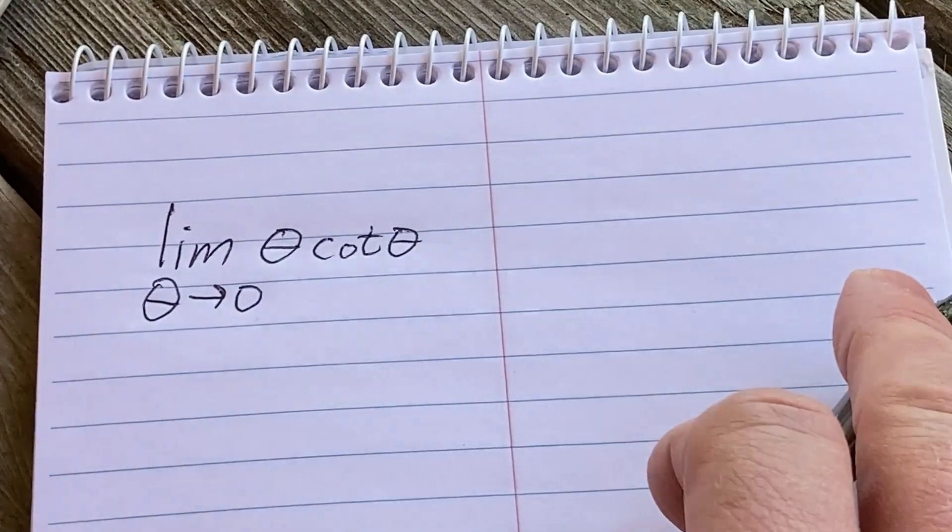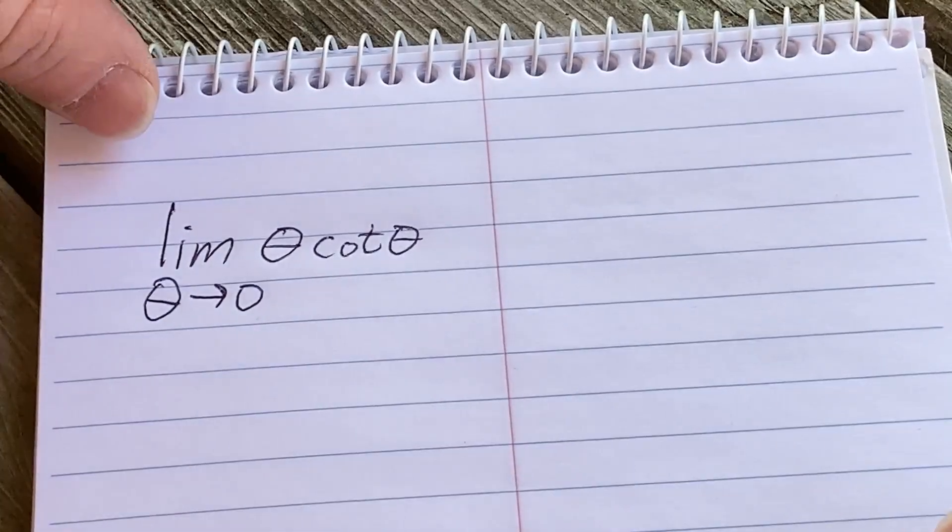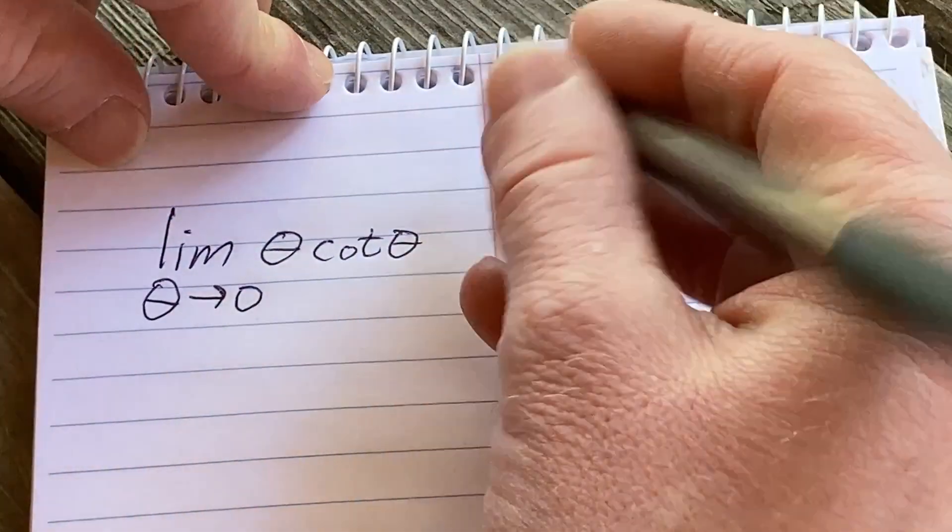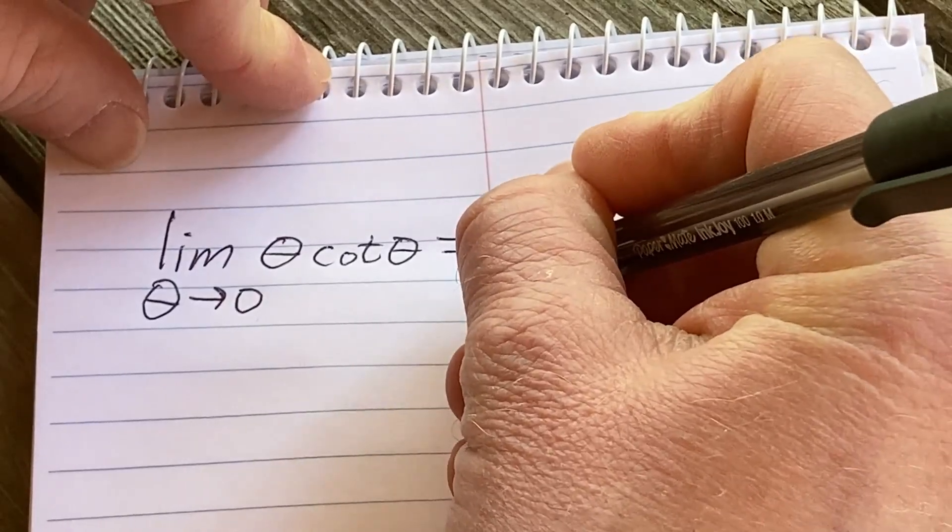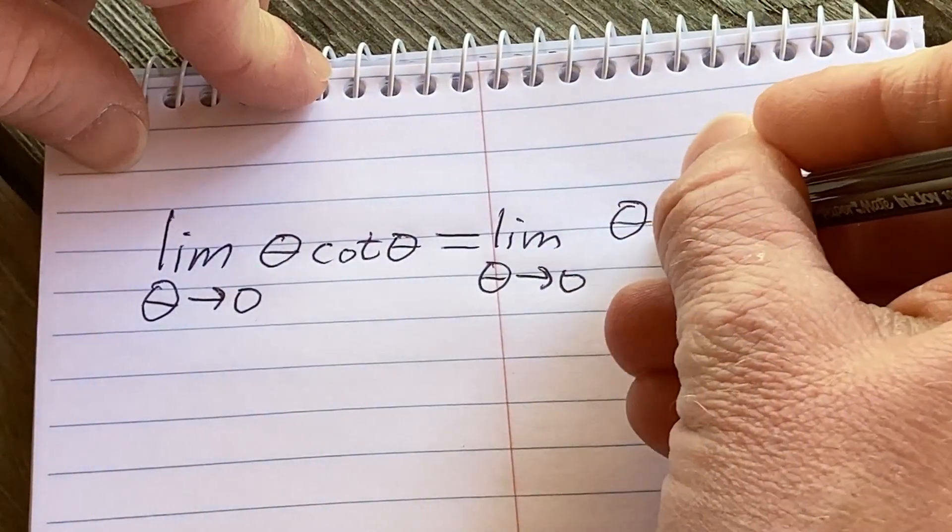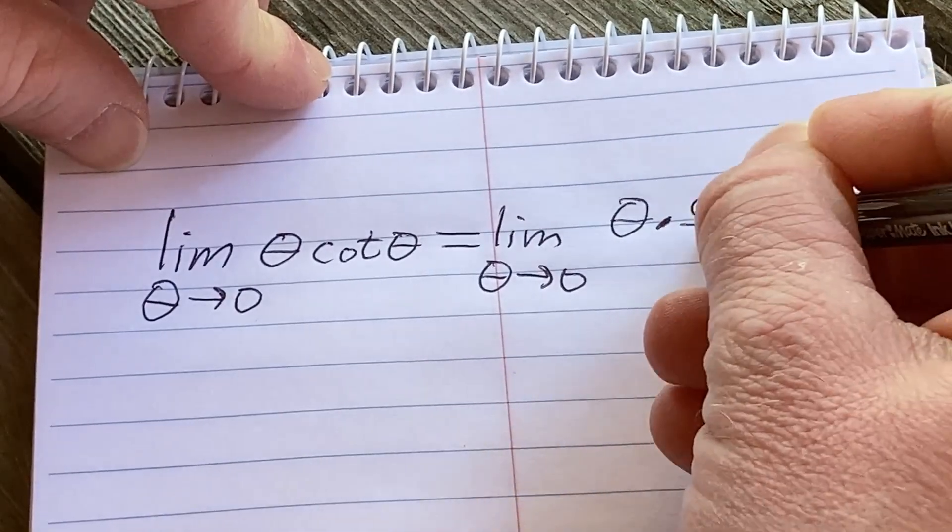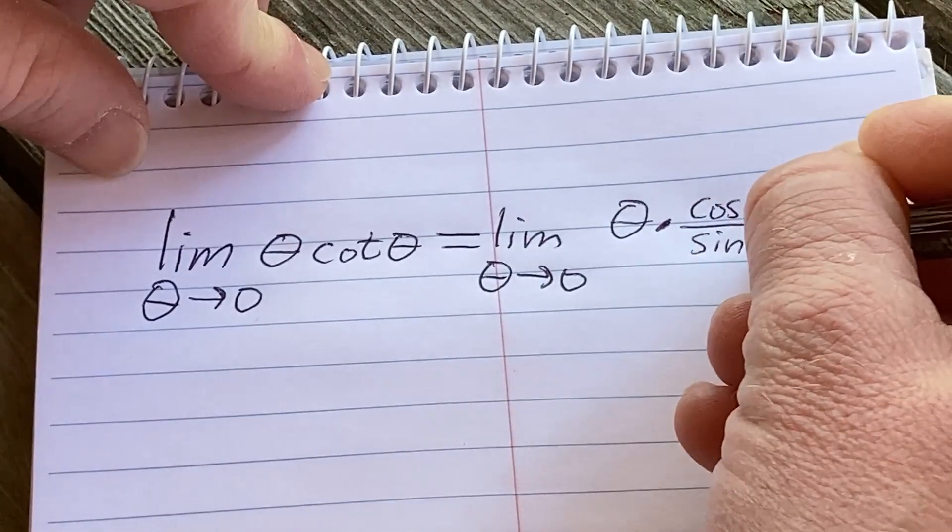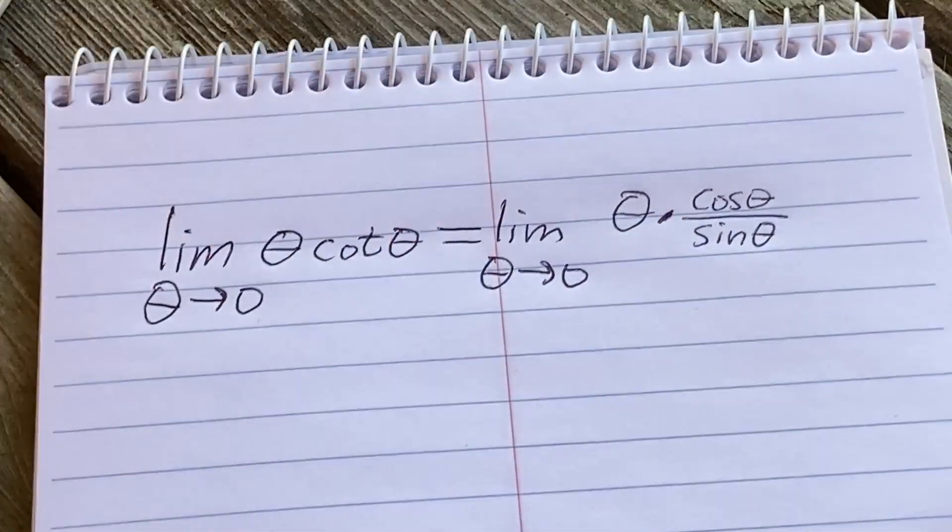So here we have the limit as theta approaches zero of theta times cotangent. So I'm thinking the first step here is going to be to write cotangent in terms of more familiar trig functions like cosine and sine. So this is equal to the limit as theta approaches zero of theta times cosine theta over sine theta, because cotangent is cosine over sine.